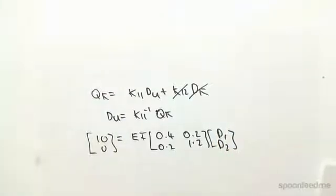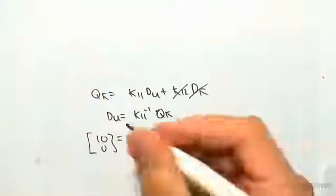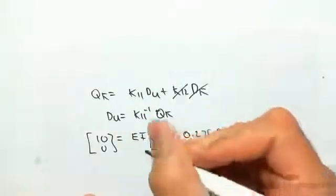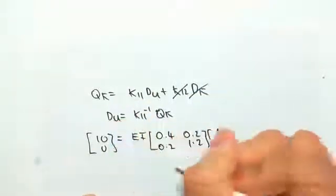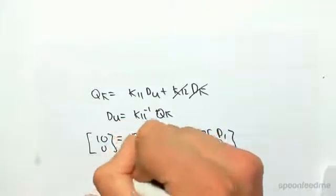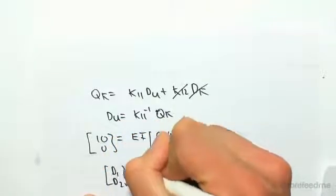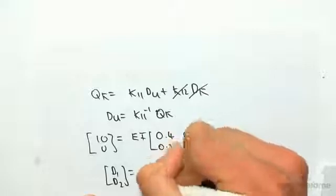Now to solve this, we would find the inverse. We're going to first of all have to divide through by EI, so we're going to have D1, D2 equals 1 on EI outside of...